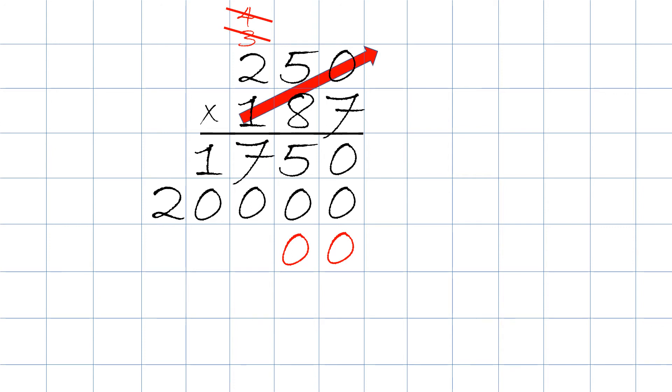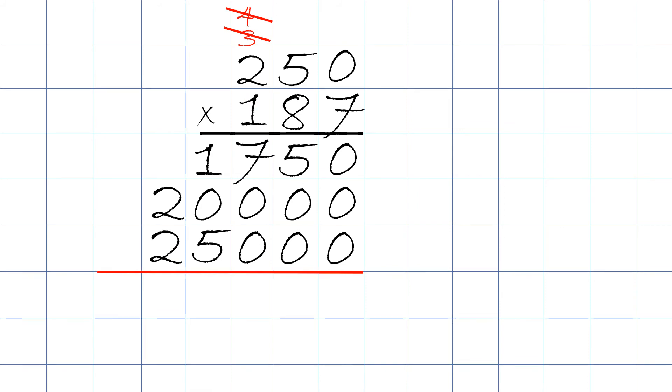One times five will be five and we put it right up here. One times two will be two, we write it right up here. We then add up all of the numbers.